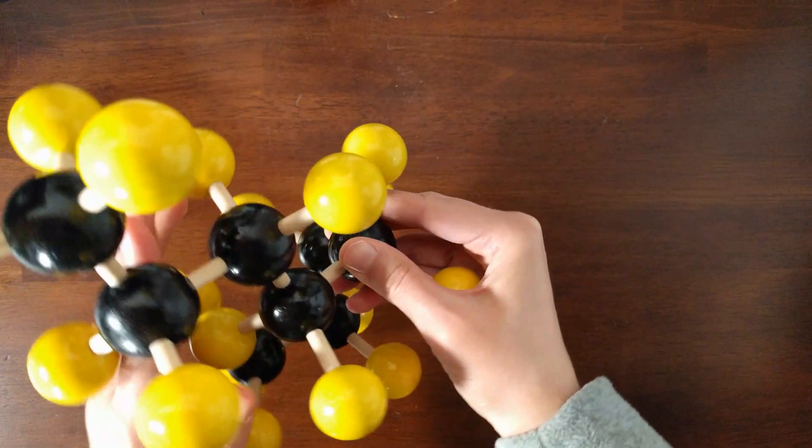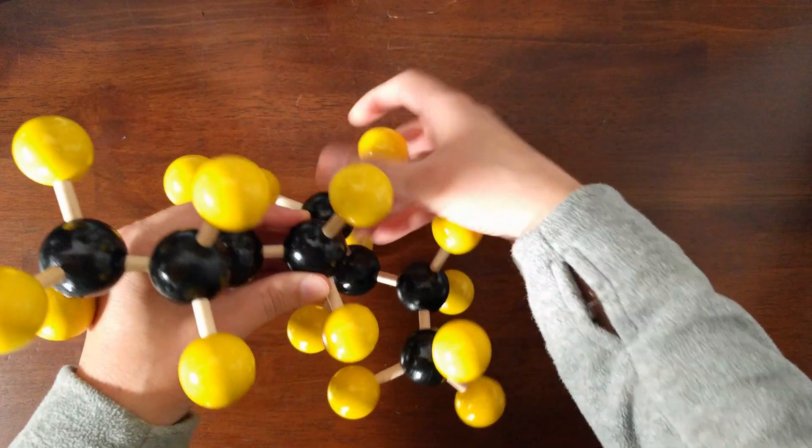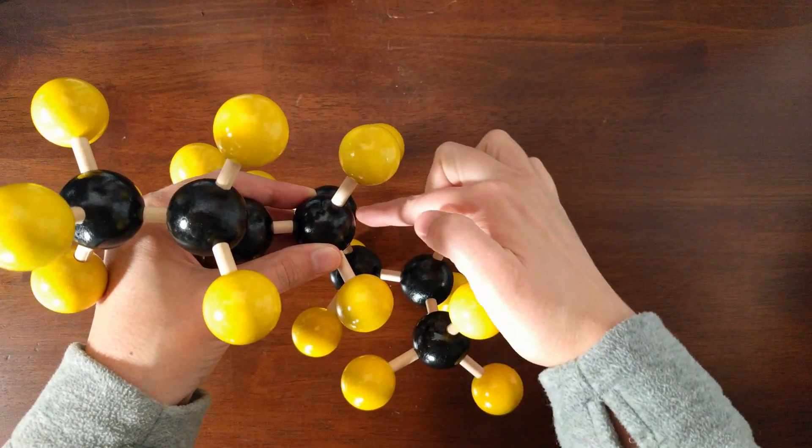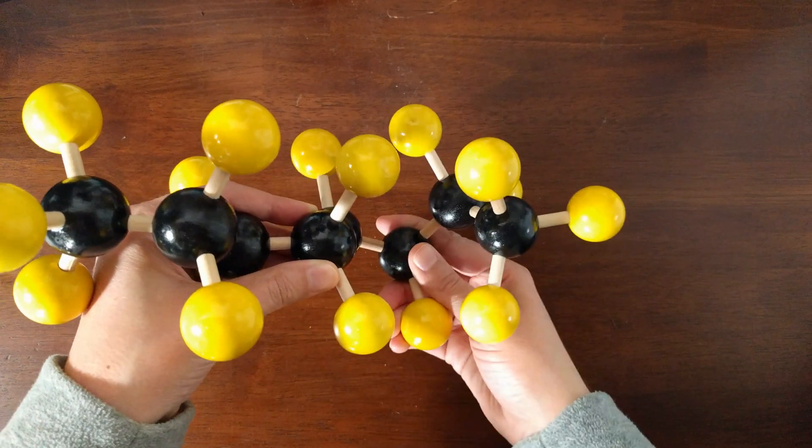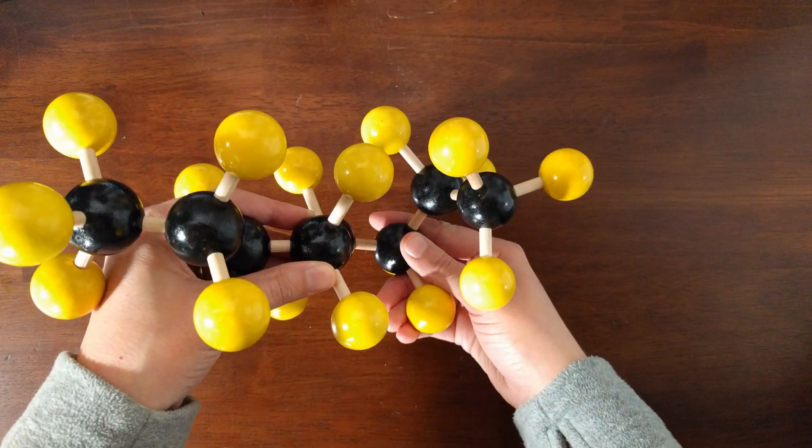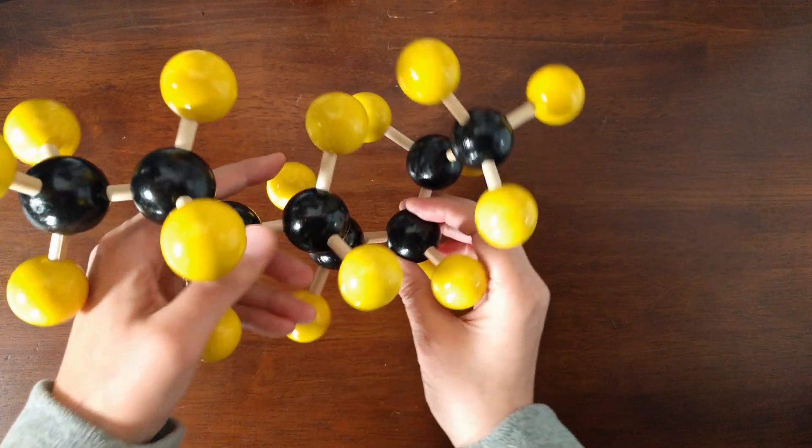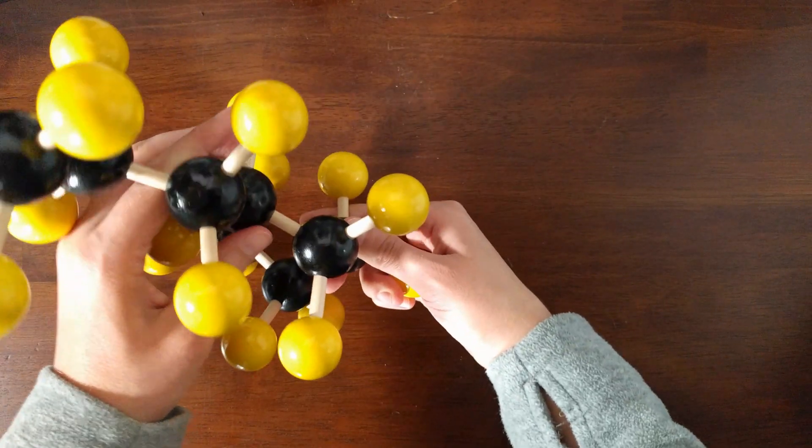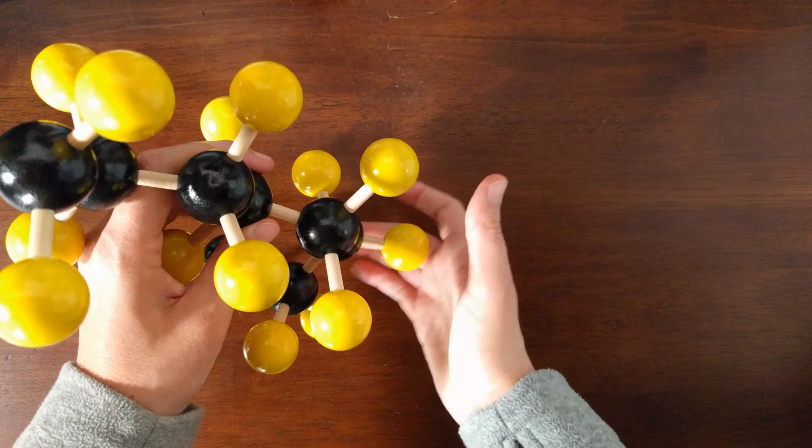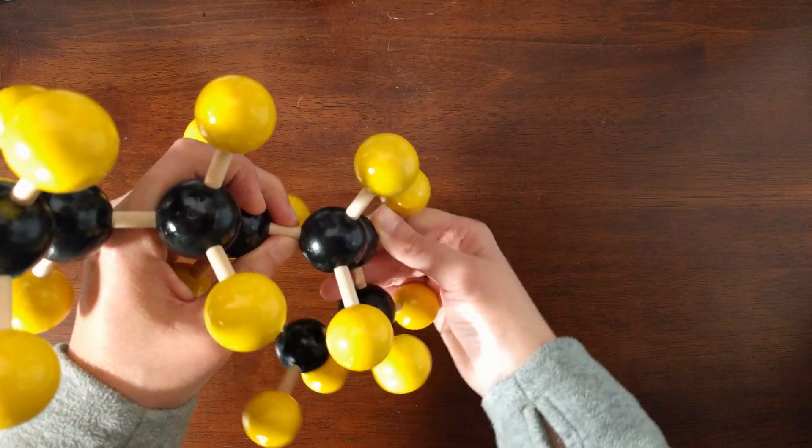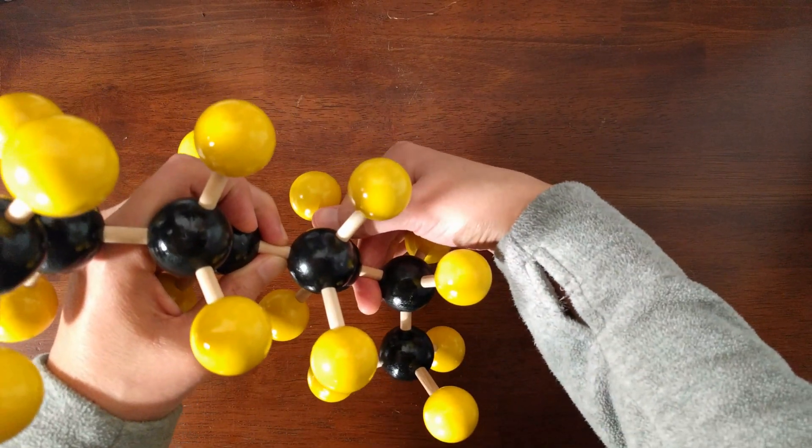Next carbons four and five. Four is in the front, five is in the back. We need to rotate that bond for our anti-conformation. Now aligning five and six. This is carbon five, carbon six. Rotating the bond between five and six to the anti-conformation.